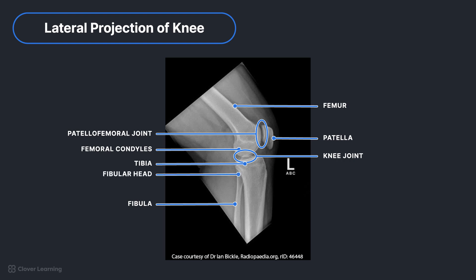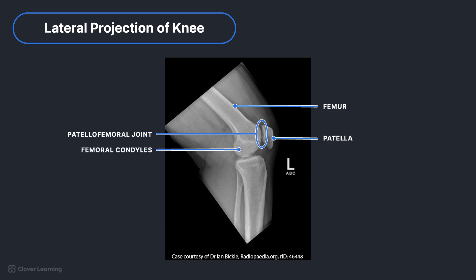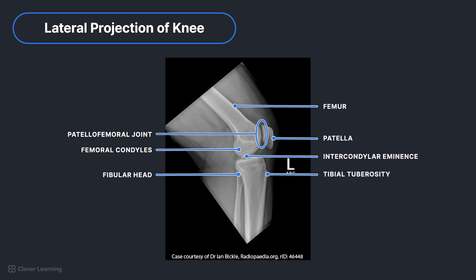As a reminder, the lateral knee is a medial-lateral projection. Looking again from superior to inferior, the following anatomy is demonstrated: distal femur, superimposed medial and lateral femoral condyles, open patellofemoral joint, intercondylar eminence, fibular head slightly superimposed by the tibia, tibial tuberosity, proximal tibia, and proximal fibula.